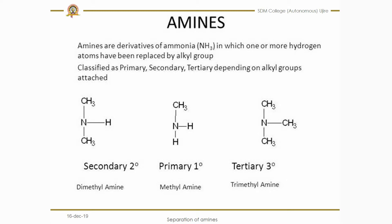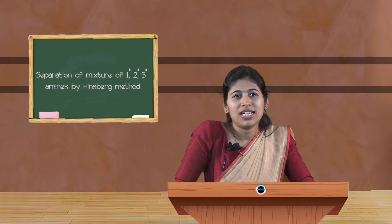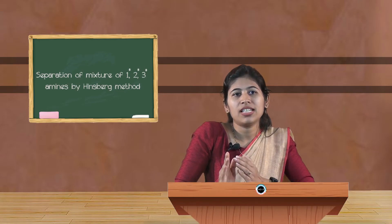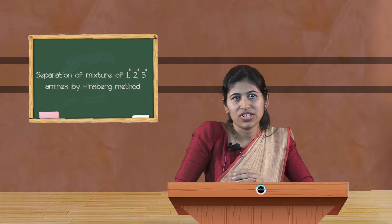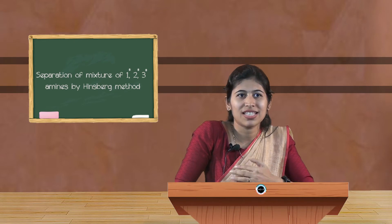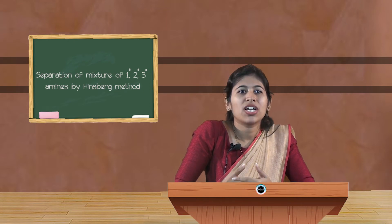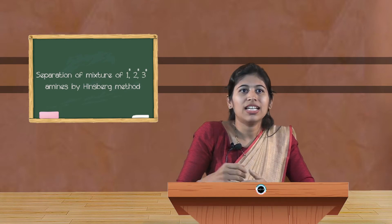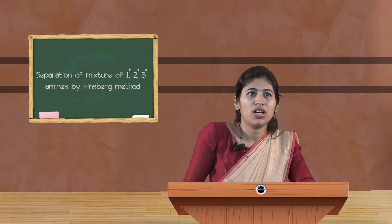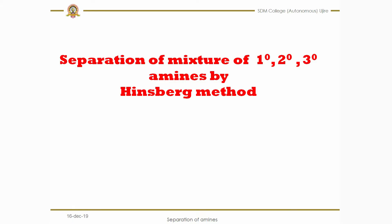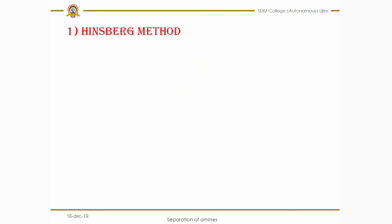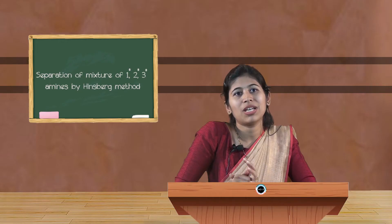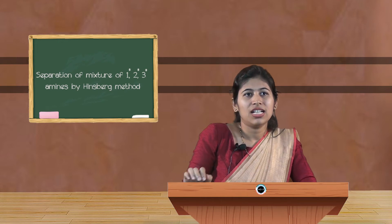Now let us discuss how to separate primary, secondary, and tertiary amines — for example, if they are mixed while synthesizing or if you obtained a mixture of products. This is done using the Hinsberg method, named after the scientist Oscar Hinsberg, who described this method in 1890.